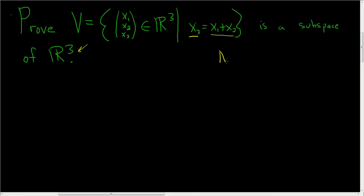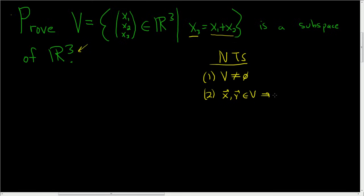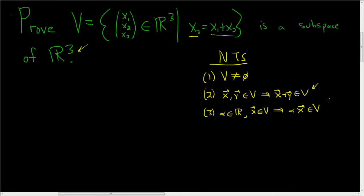So what do we need to show? We need to show three things. One, we have to show that V is not empty. Two, we have to show that if we have two vectors, say x and y, in V, then the sum of those vectors is also inside V. And lastly, we have to show that if we have a scalar alpha in our field, which is the set of real numbers, and another vector in V, that the scalar product — alpha x — is also in V. So we have to show it's closed under vector addition, and this is saying it's closed under scalar multiplication.